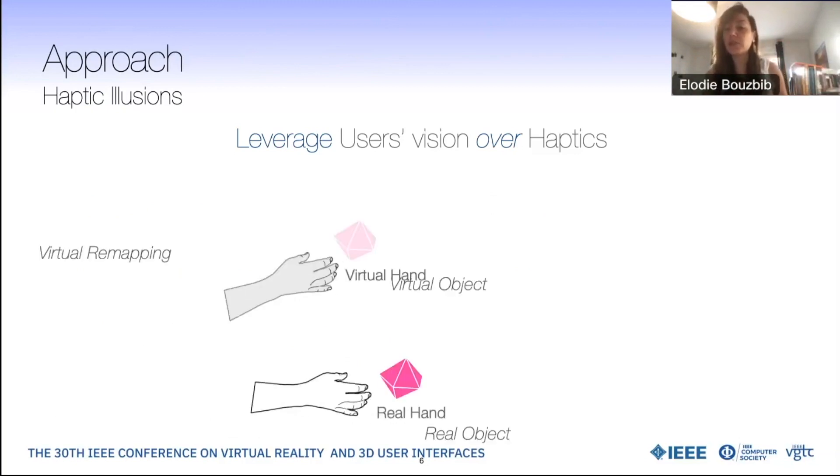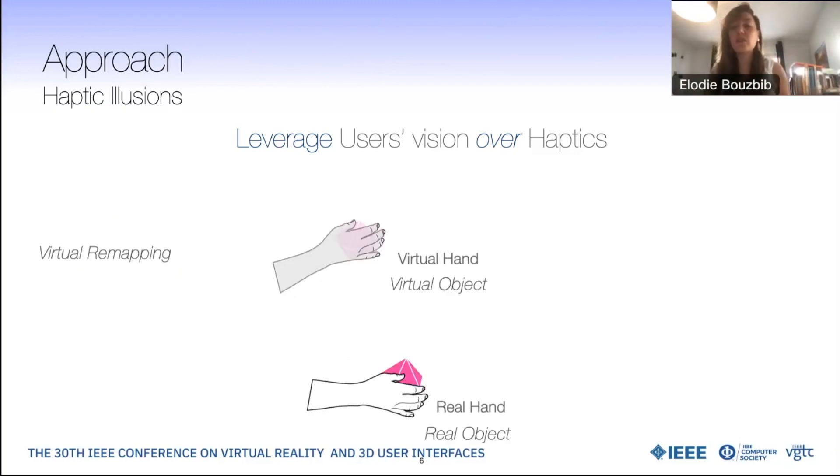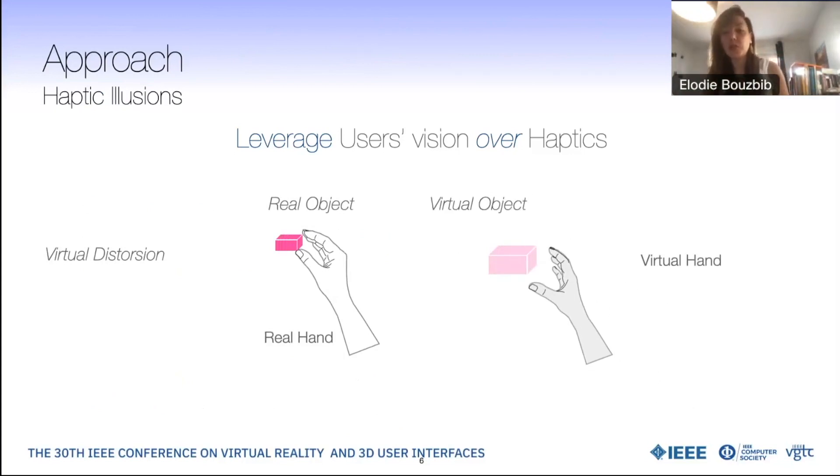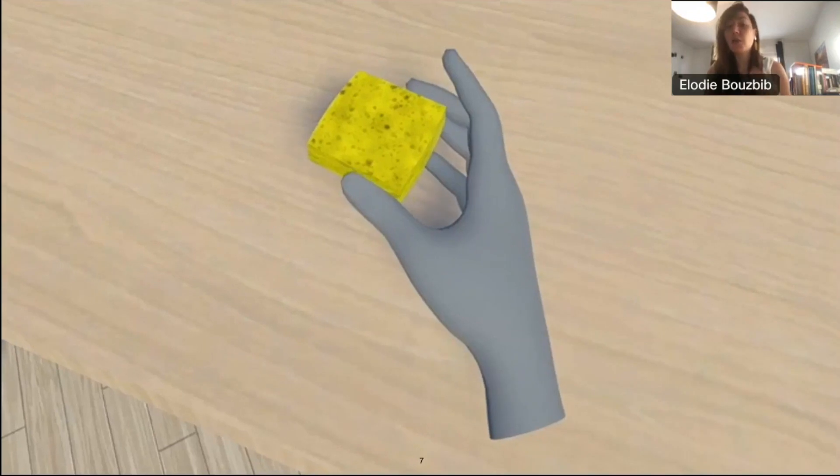They can be used with proprioception, to redirect the users and provide a virtual remapping, or for manipulating the rendering of object properties, such as size, using a virtual distortion. These techniques can be used for many haptic features, such as weight or shape. I decided to focus on stiffness.